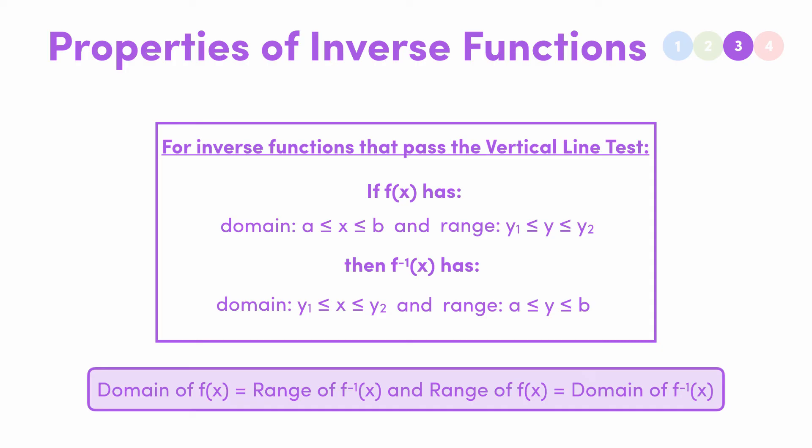Let's remember, we got inverse functions by swapping the x's and the y's, so it makes sense that the set of possible x values for f of x makes up the set of possible y values for our inverse, and vice versa.